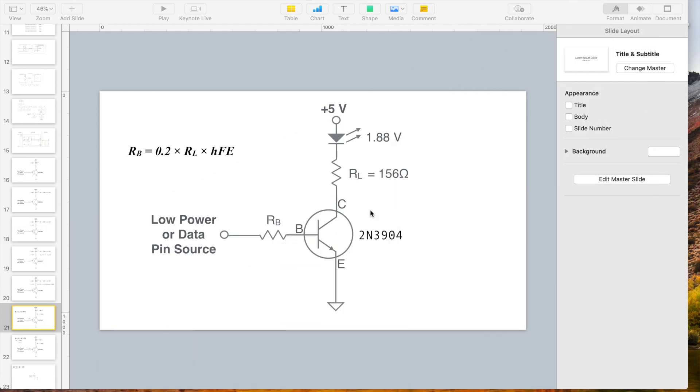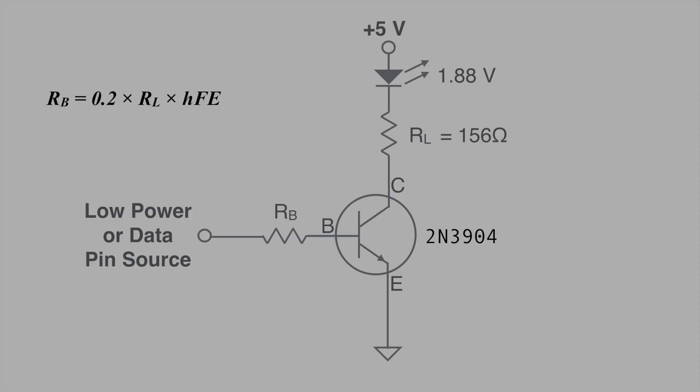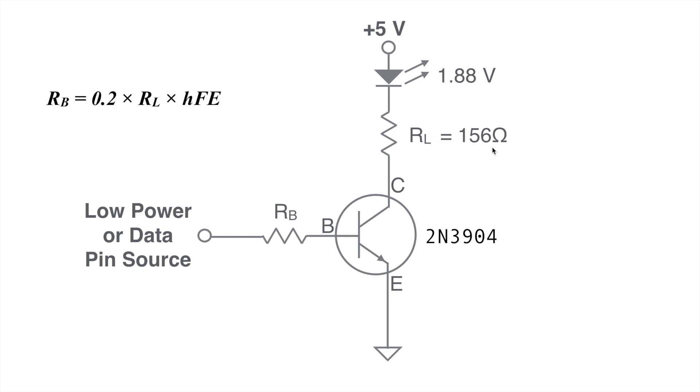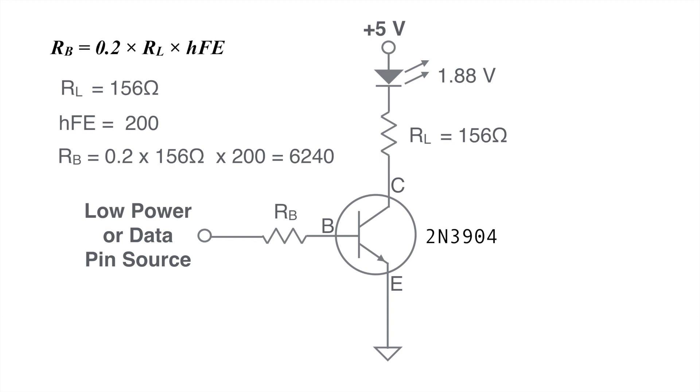Once we get those values here, we can plug those into the formula. You've got RL is the 156 and HFE is 200. Then we can go down and make that calculation. This is 6240. So we now know that our RB is going to be 6240 ohms. So what we'll wind up doing is making that just a little bit short, give it a little bit more HFE and a little bit more current going through. Now that we have all those numbers, let's go ahead and build that circuit and see how it works. All right, so we've got those numbers. I'll build this circuit out. I may stop every once in a while and show you a thing or two, but let's get it built.